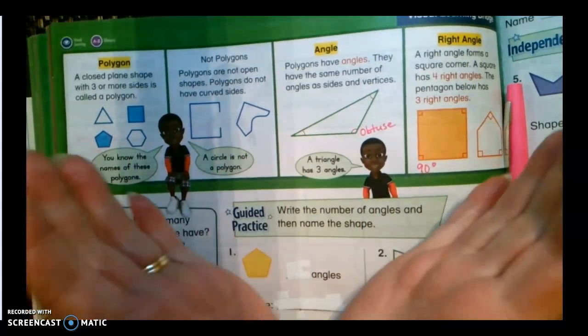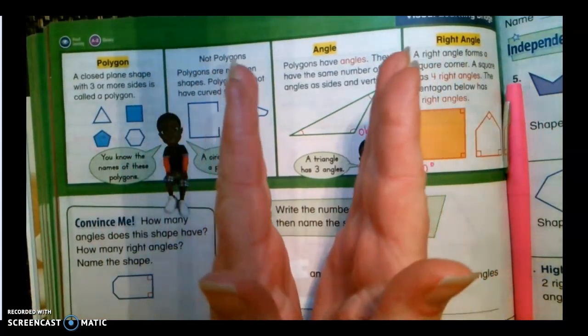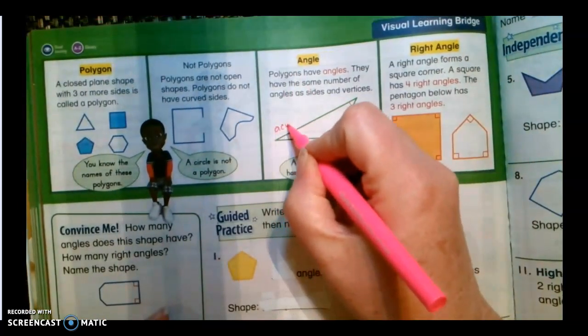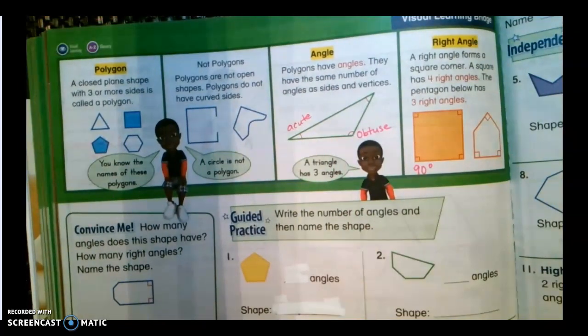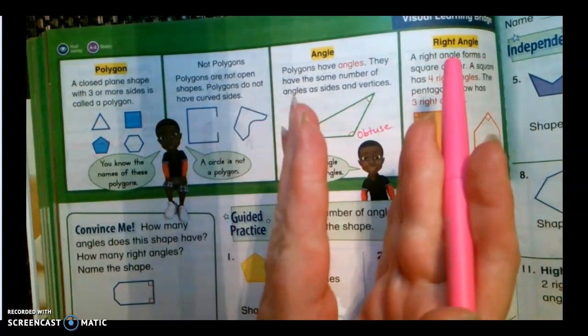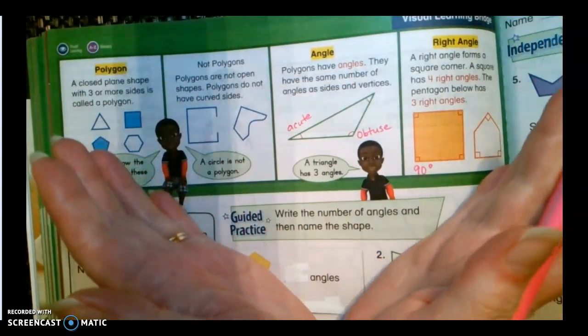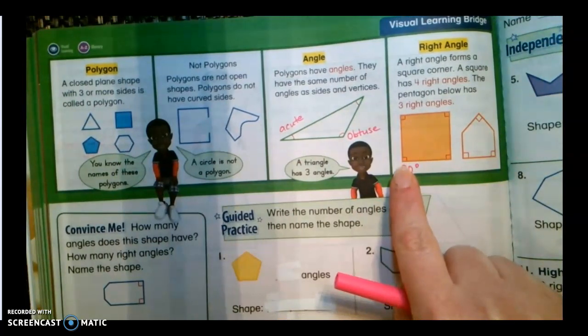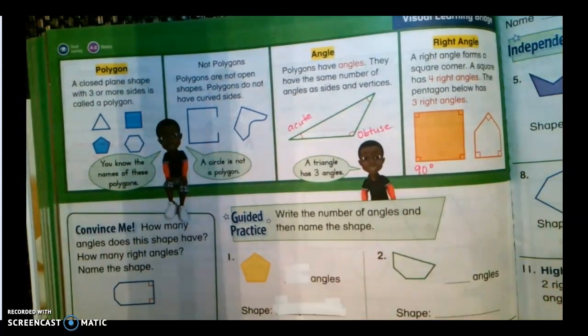And then we have this little teeny tiny angle right here. And it is called acute. Sounds like a sneeze. Acute. So we have acute angles which are super tiny. Obtuse angles which are really, really big. And then we have our 90 degree angle which makes a perfectly squared edge.